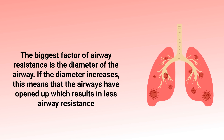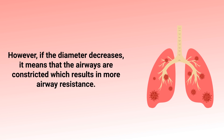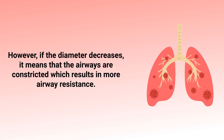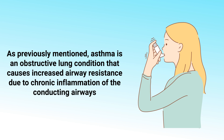The biggest factor of airway resistance is the diameter of the airway. If the diameter increases, this means that the airways have opened up, which results in less airway resistance. However, if the diameter decreases, it means that the airways are constricted, which results in more airway resistance. Asthma is an obstructive lung condition that causes increased airway resistance due to chronic inflammation of the conducting airways.